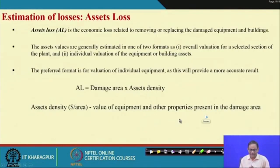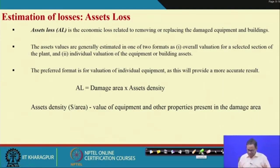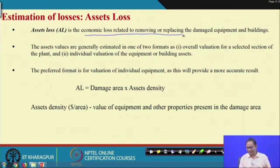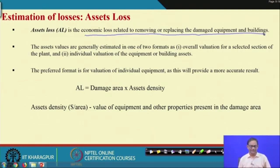Now we will look at how to calculate asset loss. Asset loss is the economic loss related to removing or replacing the damaged equipment or building. Assets include all equipment and infrastructure. Because of the accident, there can be removal as well as replacement of damaged equipment or infrastructure, and the economic loss from that is the asset loss.